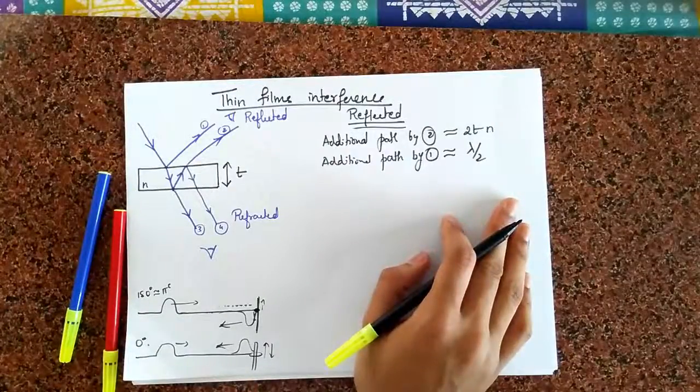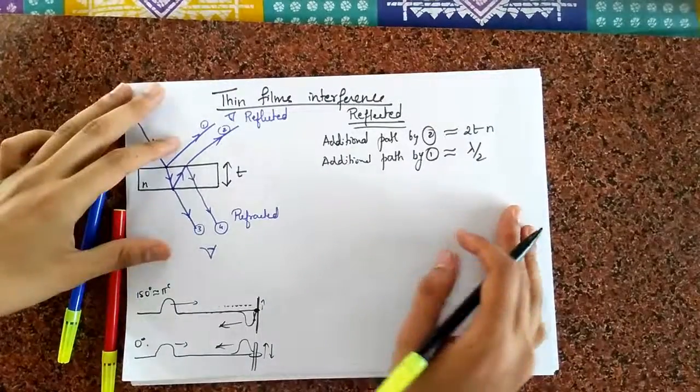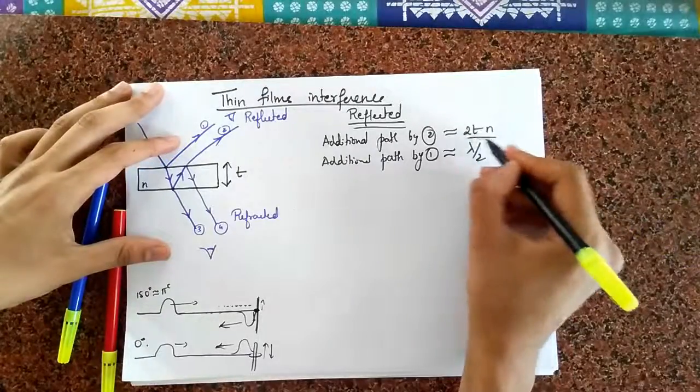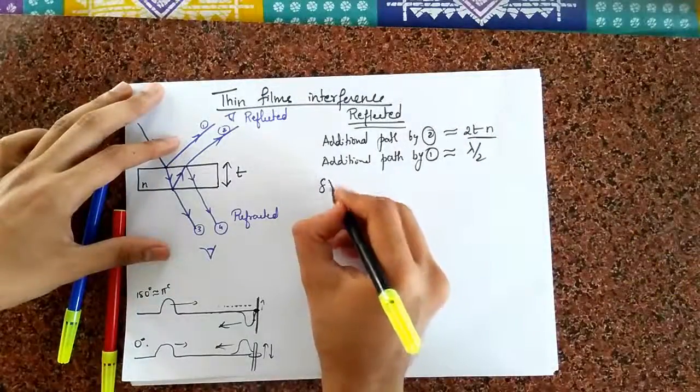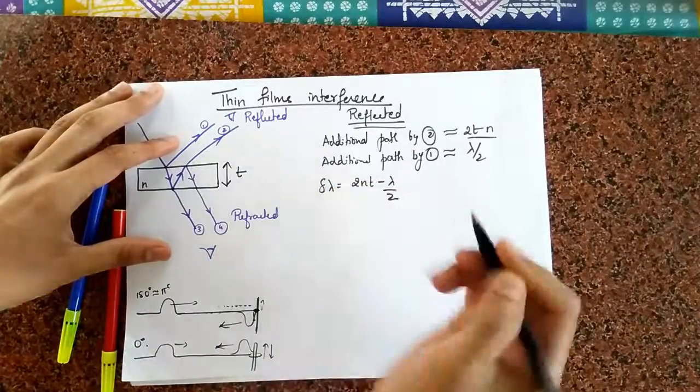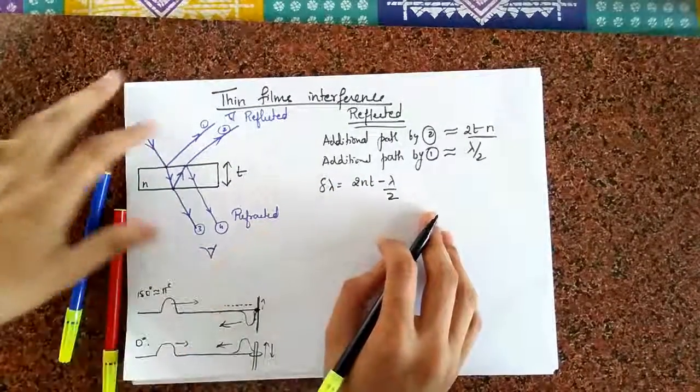And therefore, what is the total path difference? Well, the total path difference has to be the subtraction of these two. This number is usually going to be higher than this one. So, I can say total path difference is going to be 2nT minus lambda by 2. That's what you get in the refracted system.